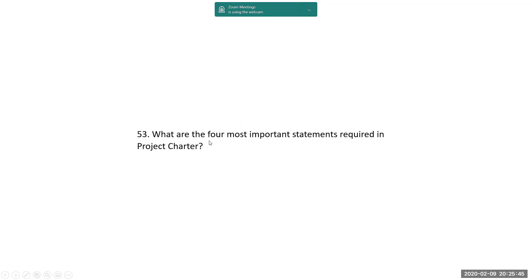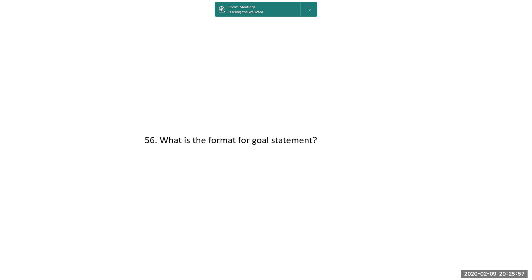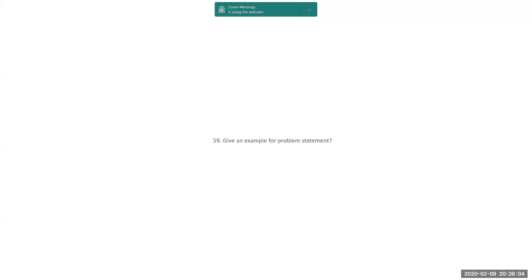What are the four most important statements required in a project charter? The format is: the business case is the first point, the problem statement is the next, goal statement is the third, and scope statement is the fourth. Give an example for each. These have been discussed in class, and I will discuss more in the next class.